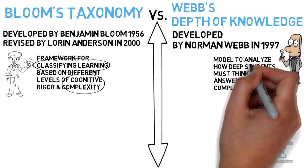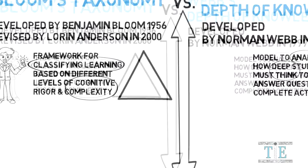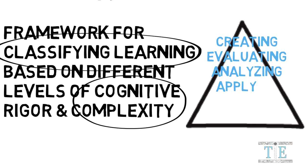The levels of Bloom's Taxonomy are usually presented in a triangle with higher cognitive processes on top. The levels are creating, evaluating, analyzing, applying, understanding, and remembering.